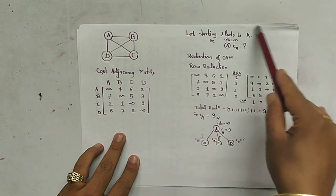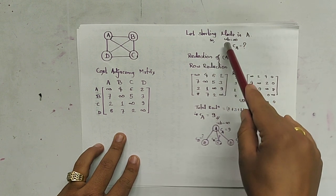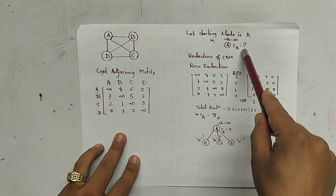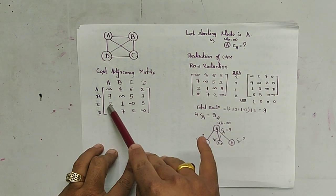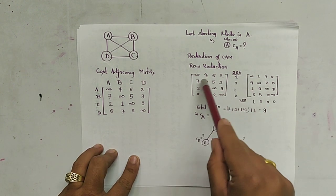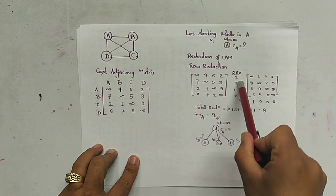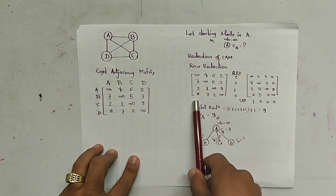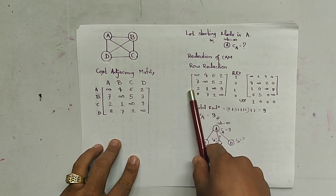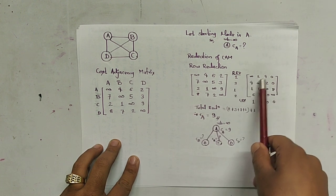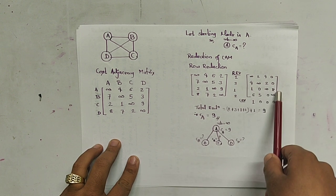Let us consider the starting node is A. The upper bound is set as infinity. To find the cost of A, we have to reduce this matrix first by row and then by column. In the first row the minimum value is 2, second row is 3, third row is 1, fourth row is 2. After subtracting these minimum values, the row-reduced matrix becomes: infinity 2 4 0 / 4 infinity 2 0 / 1 0 infinity 8.